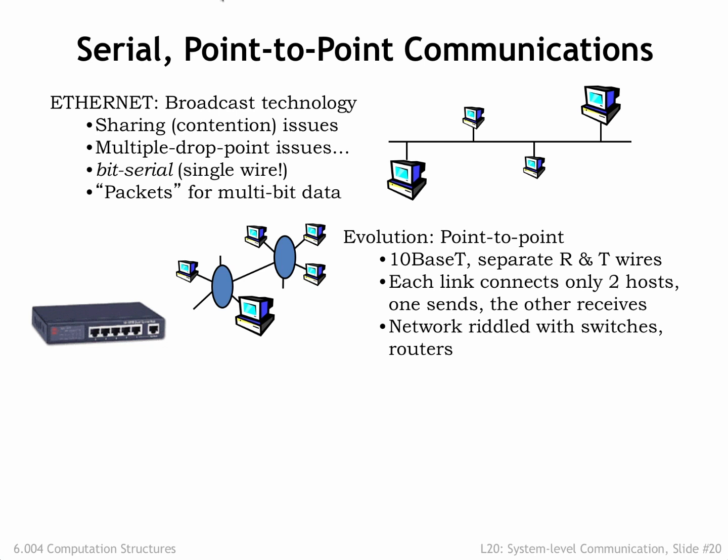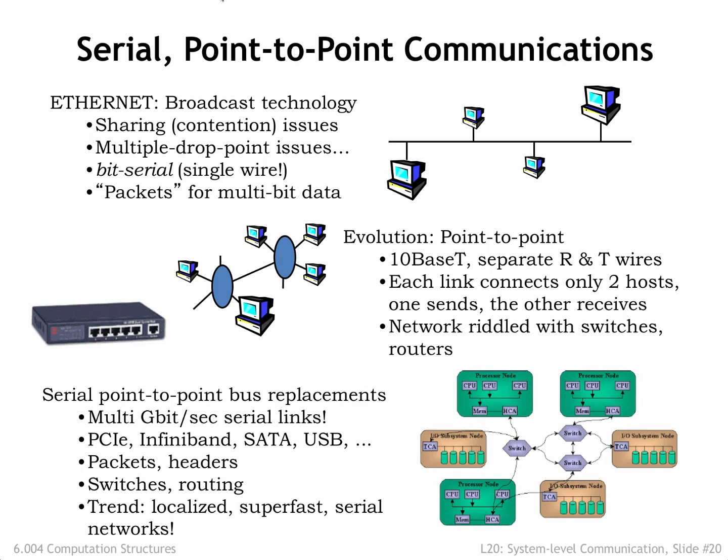The network uses separate switches and routers to receive packets from a sender and then forward the packets over a point-to-point link to the next switch, and so on across multiple point-to-point links until the packet arrives at its destination. System-level connections have evolved to use the same communication strategy: point-to-point links with switches for routing packets to their intended destination.